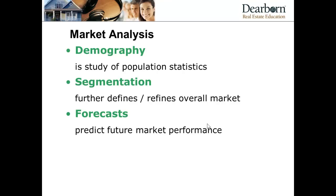For example, if demographics indicate that only people 55 or older are going to be interested in a home because of age restrictions, or you're evaluating potential buyers for a new apartment complex — those are the kind of segments where for this particular portion of the population, this particular type of property may be in demand.